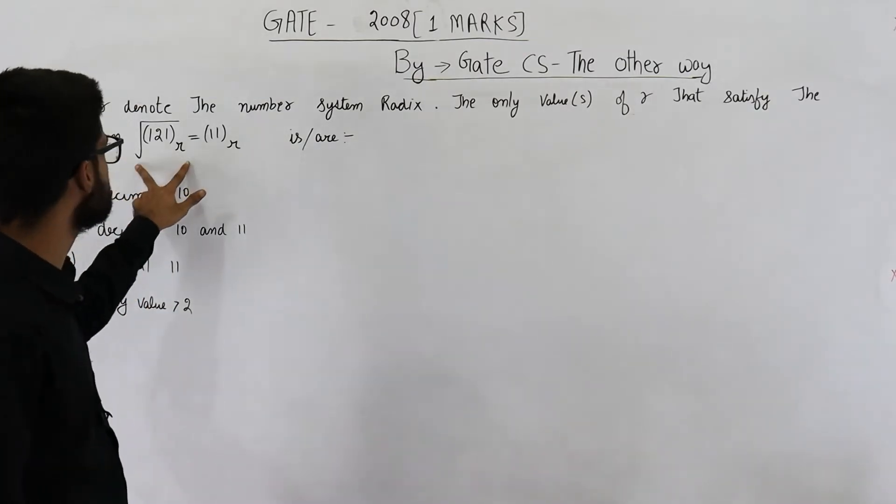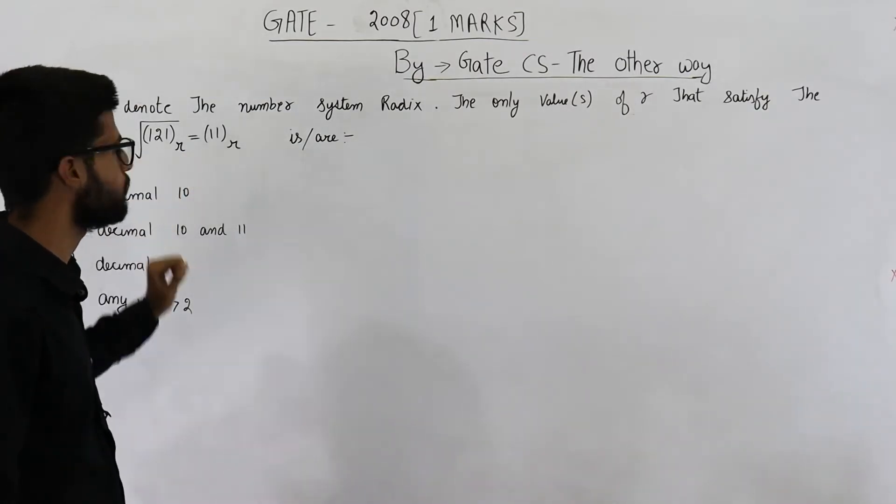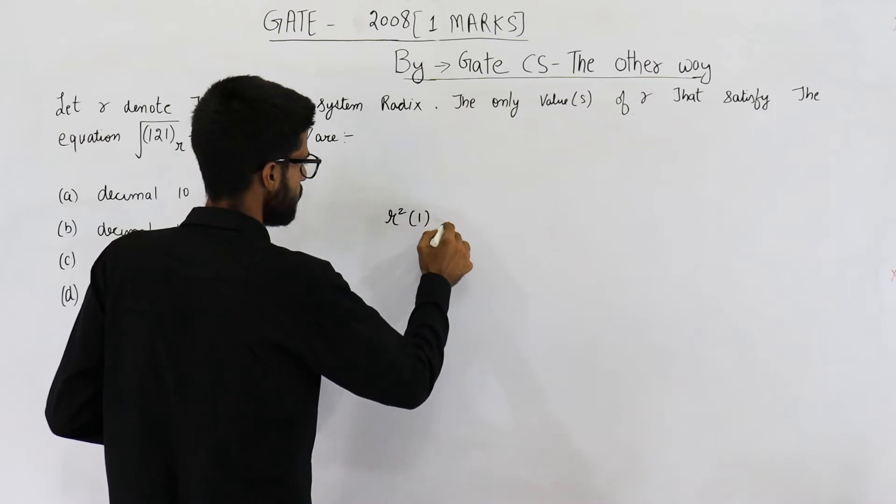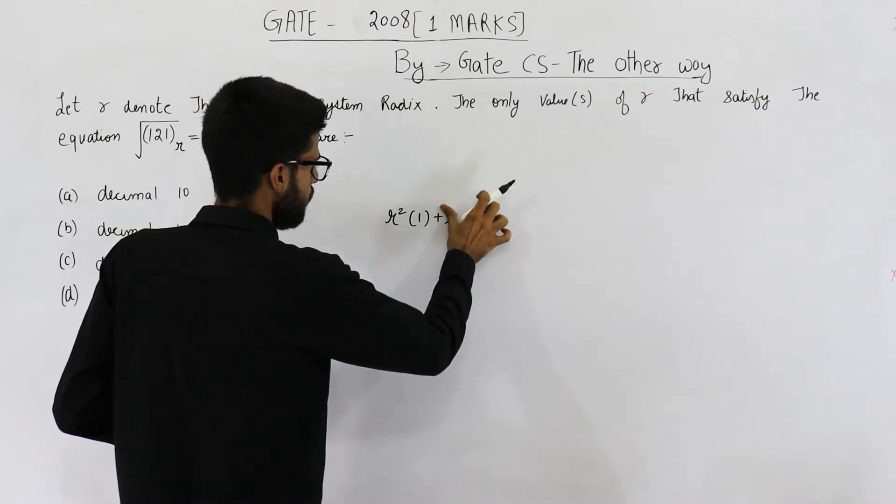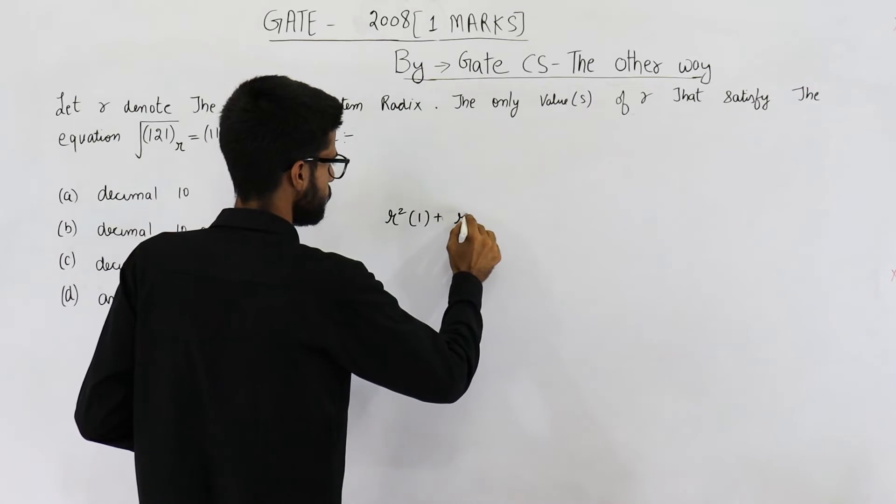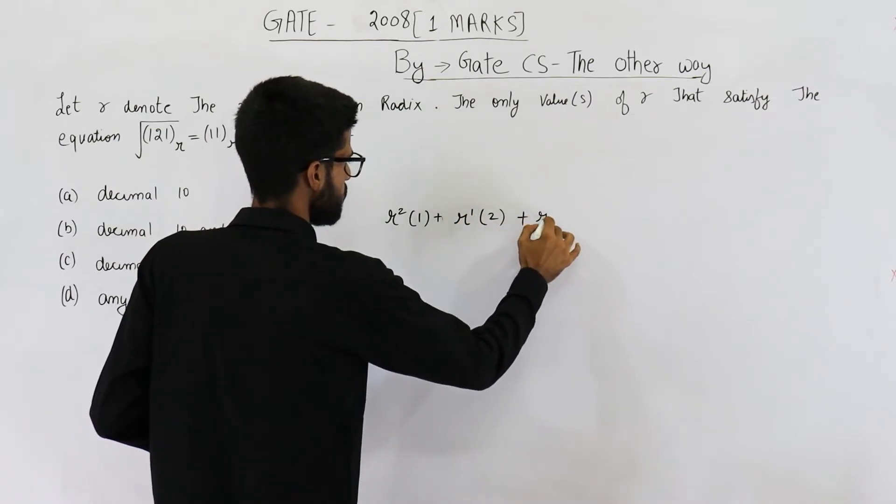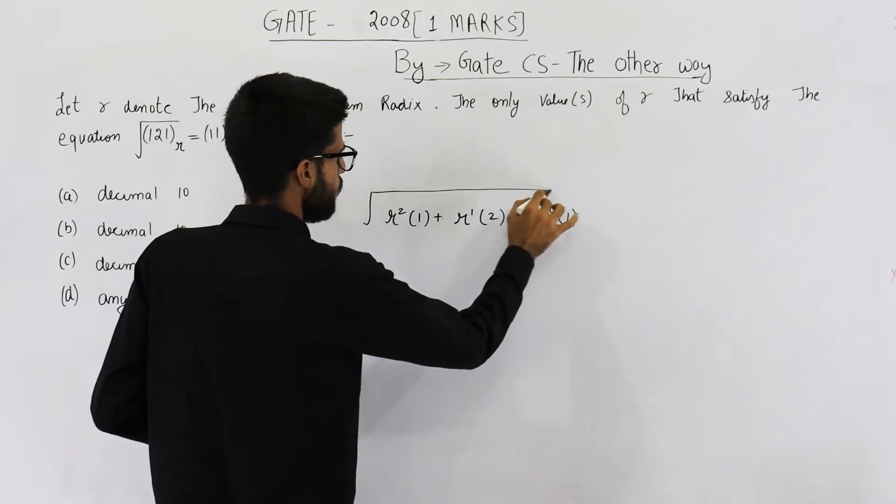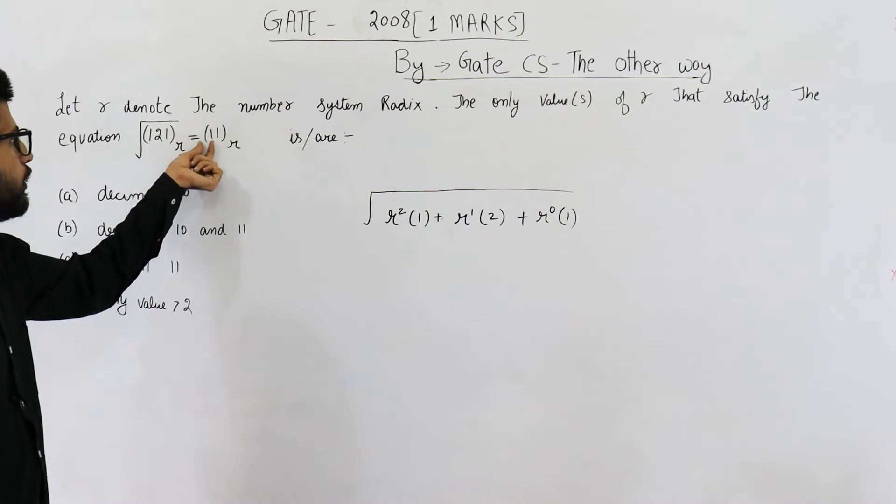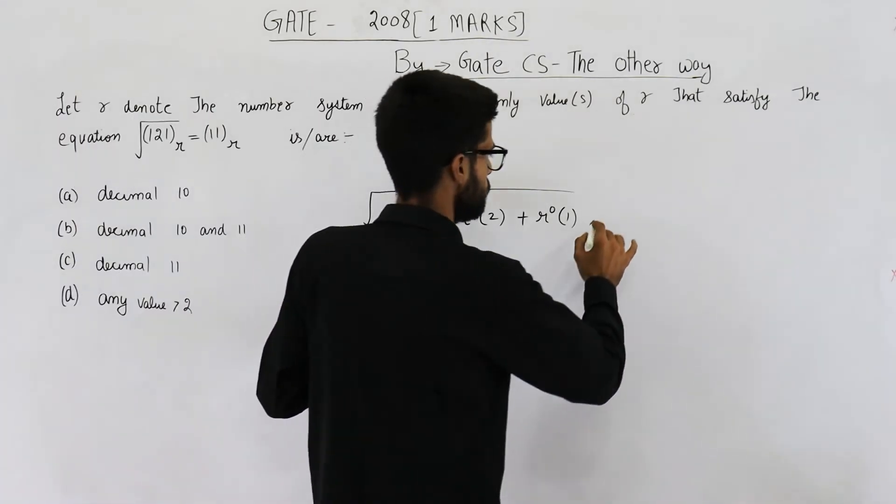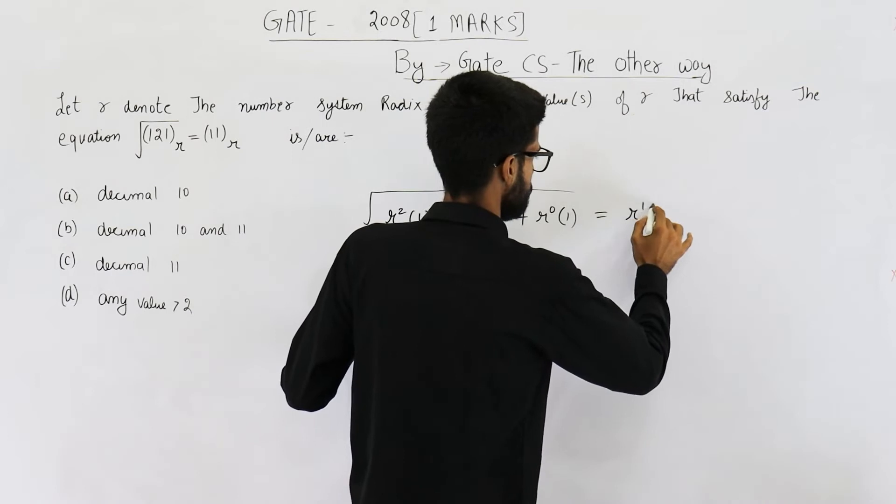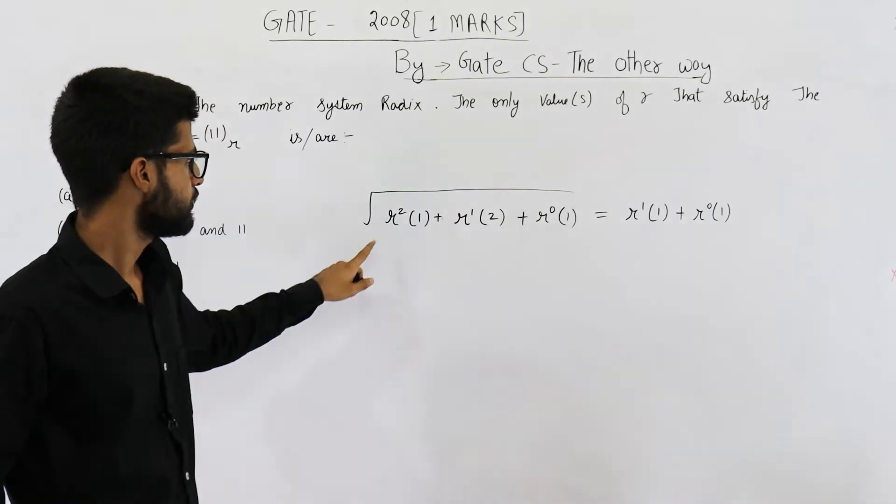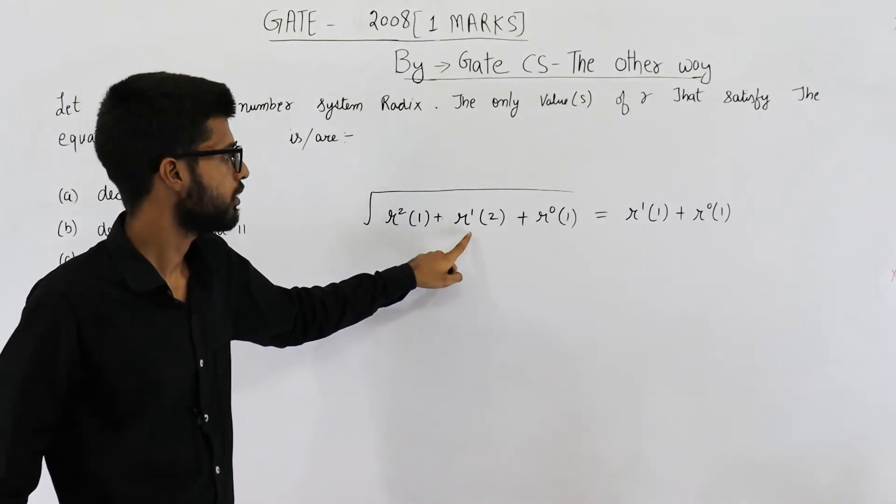That means step one: convert this number into base 10. So it will be r squared times 1 plus r power 1 times 2 plus r power 0 times 1, and we have under root. This will be r times 1 plus r power 0 times 1. So this is r squared plus 2r plus 1.